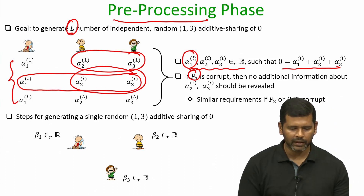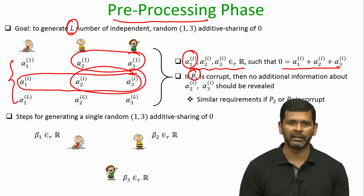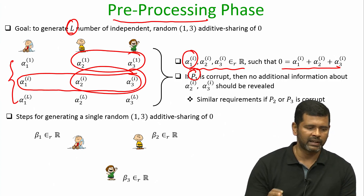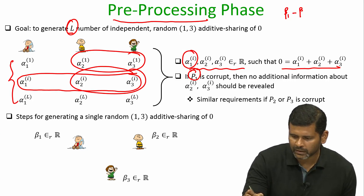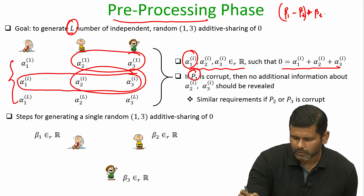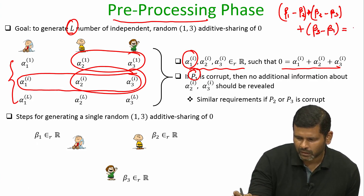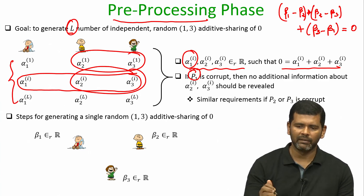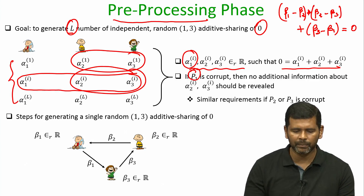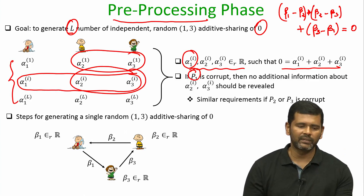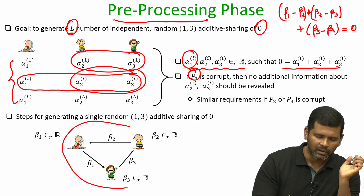Let us see how to generate one such vector of values — the same process can be executed in parallel L times to generate L random sharings of 0. Each party picks a random value locally: P1 picks beta1, P2 picks beta2, and P3 picks beta3. Observe that (beta1 - beta2) + (beta2 - beta3) + (beta3 - beta1) = 0. So this gives us a secret sharing of 0, and the protocol is based on this idea. P2 sends its beta value to P1, P1 sends its beta value to P3, and P3 sends its beta value to P2 — the same circular order of communication is followed.